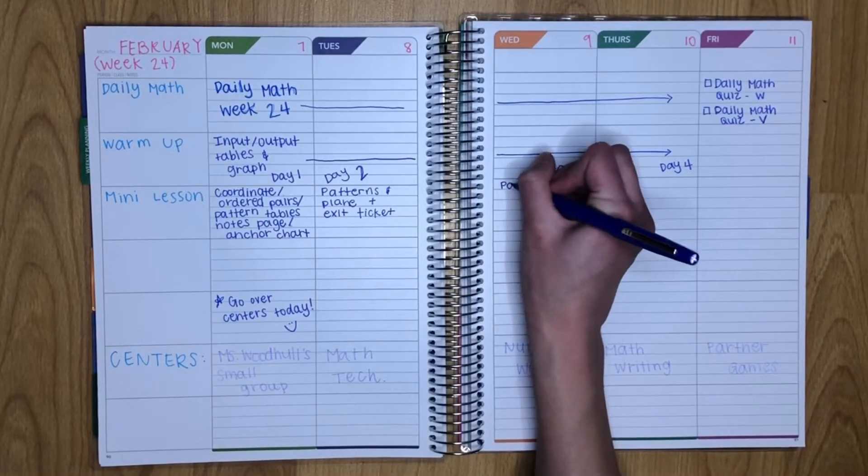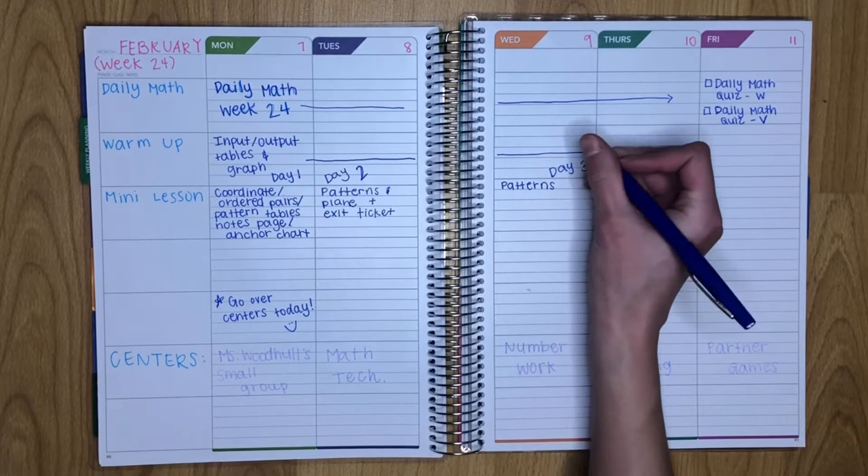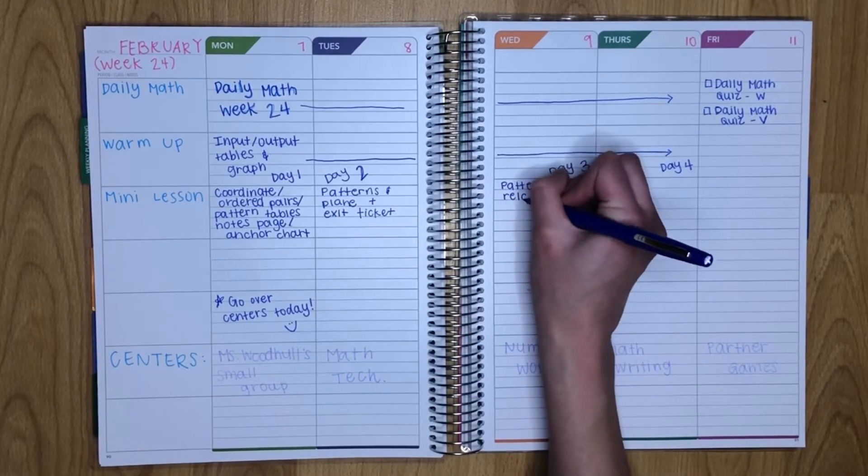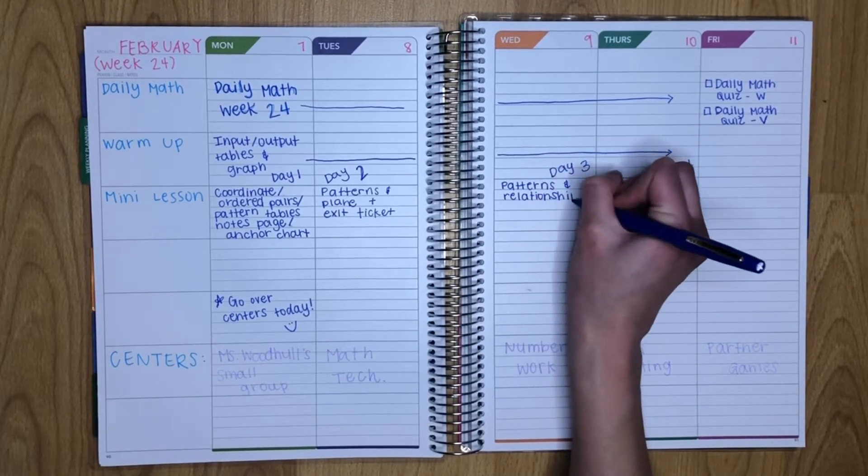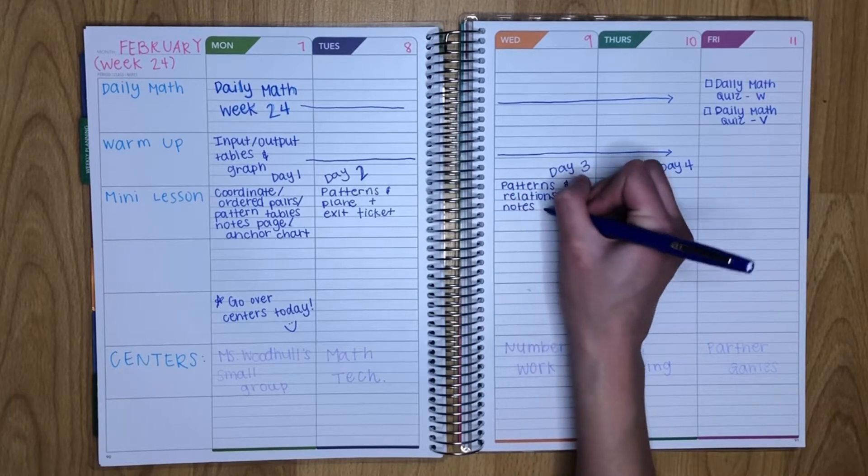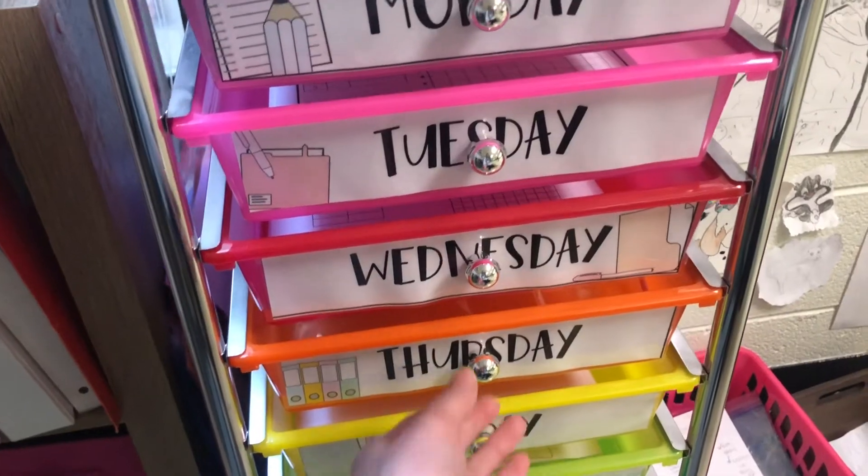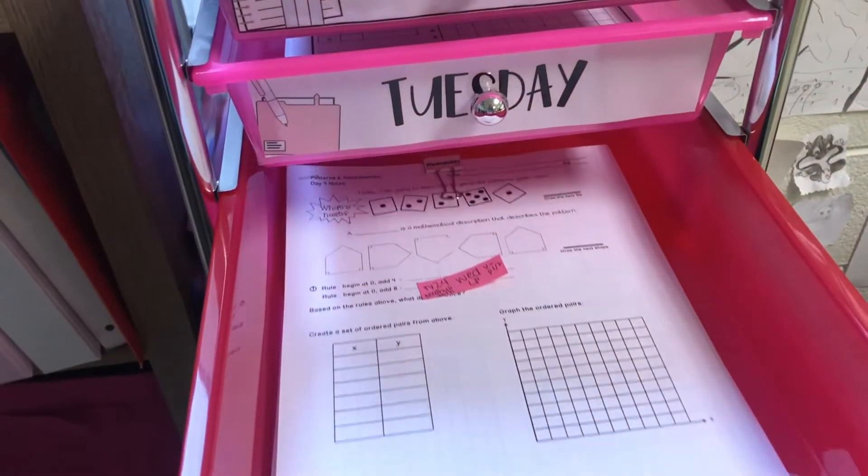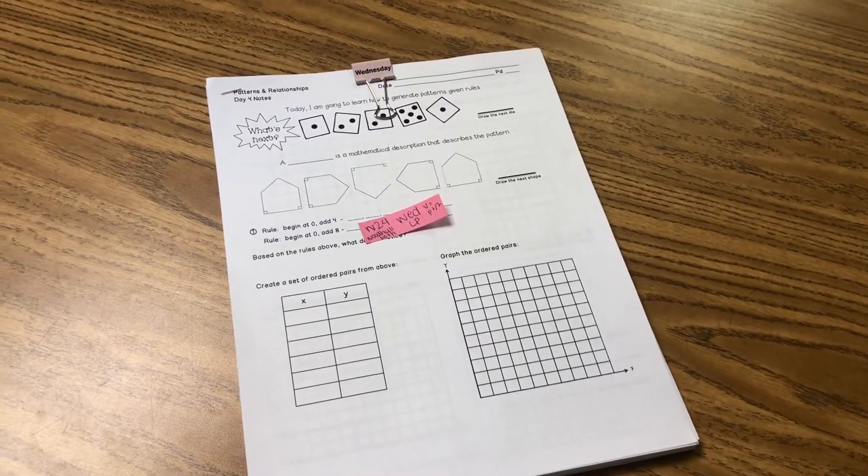Moving on to our Wednesday mini-lessons, we will do a patterns and relationships notes page. So just more practice with this skill. We will do this both whole group and then some parts individually. So I'll go over to my Wednesday drawer, and that's the plans for Wednesday.